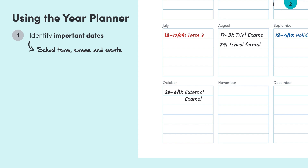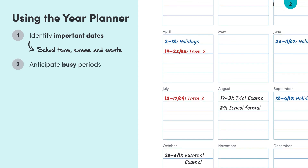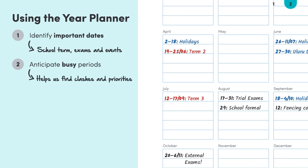Next, we need to anticipate when the busy periods of our year are going to be. This can help you figure out whether that family holiday to Uluru in June or that fencing competition in September are going to clash with exam blocks or other deadlines. This means you can start prioritising right from the start.